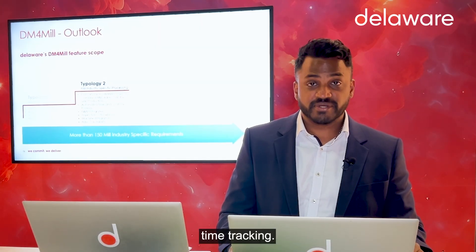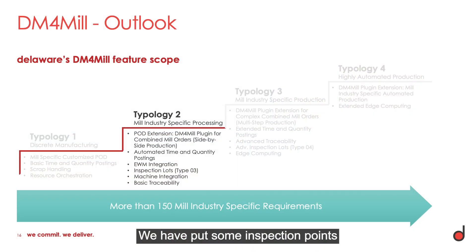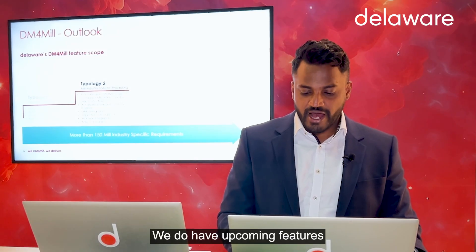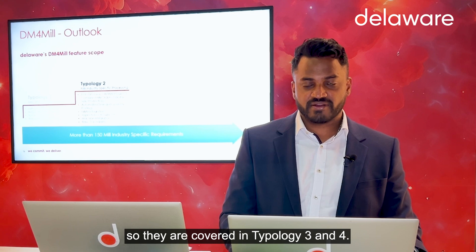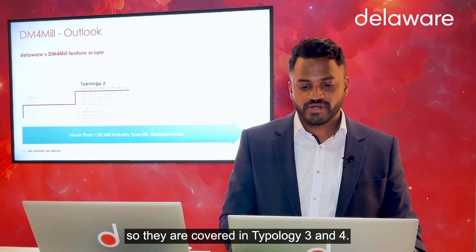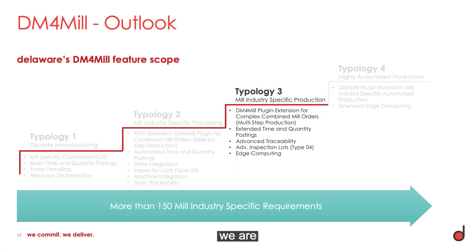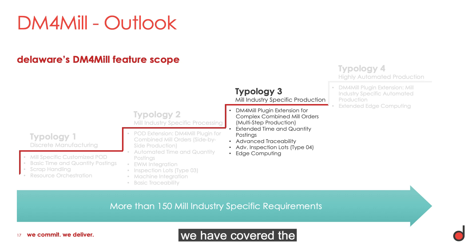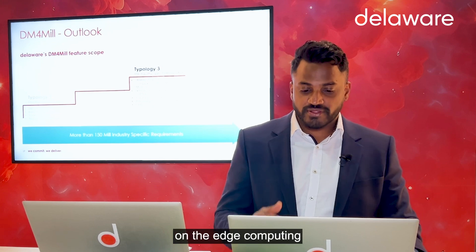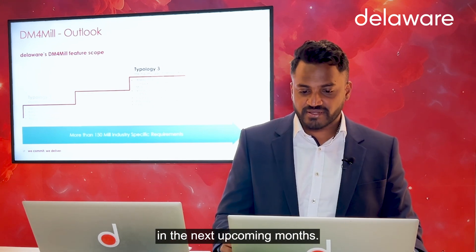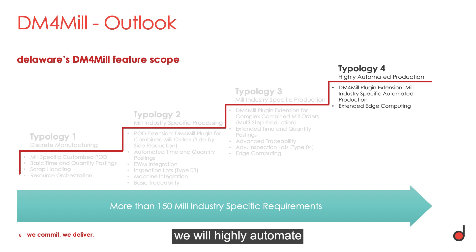We have integrated EWM, added inspection points, and are interacting with the machines. Upcoming features are covered in typologies three and four. In typology three we are covering multi-step production, compared to typology two which covered side-by-side production. We are still focusing on edge computing in the upcoming months. In typology four, we will highly automate the production.